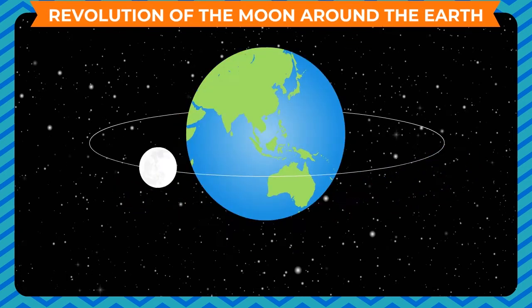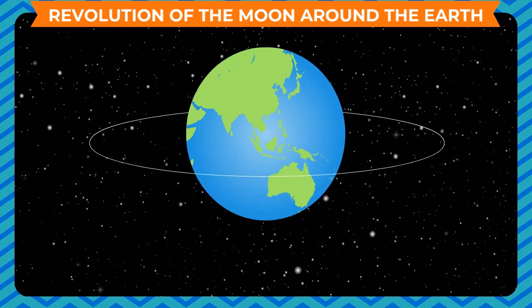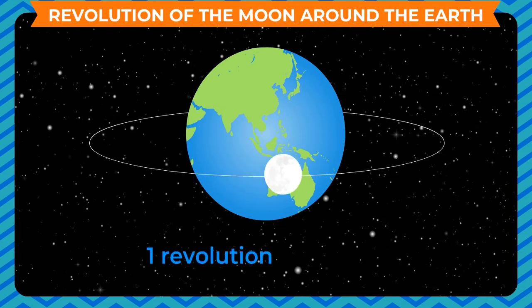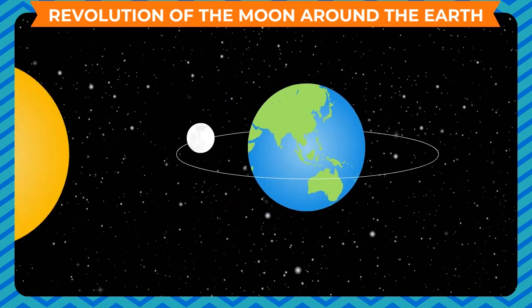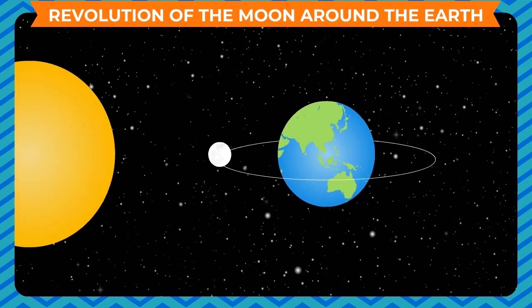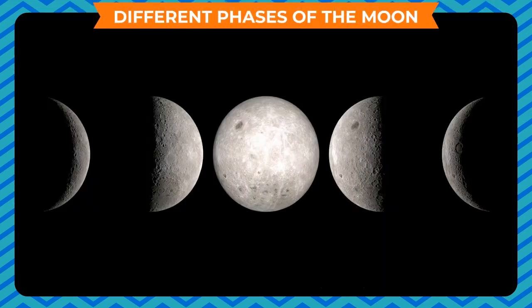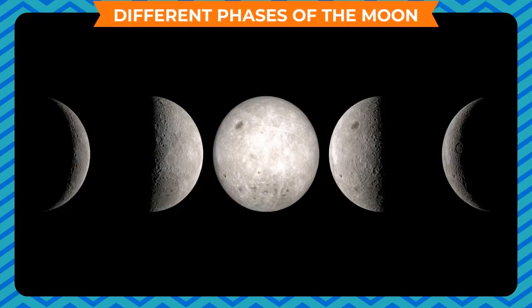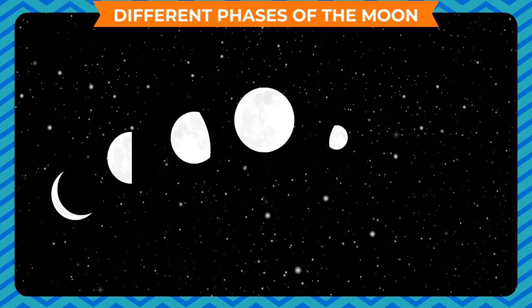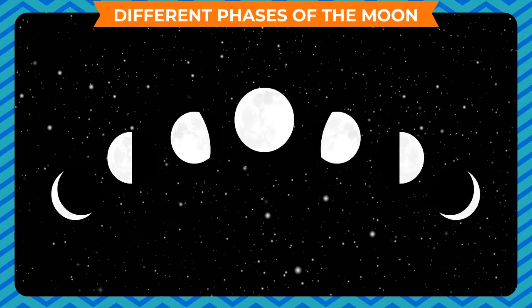Just as the earth revolves around the sun, the moon revolves around the earth in a fixed orbit. The moon completes one revolution around the earth in nearly 29 days. Sometimes the moon comes in between the sun and the earth while moving in its orbit.